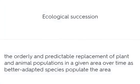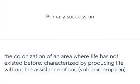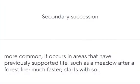Ecological succession is the orderly and predictable replacement of plant and animal populations in a given area over time as better-adapted species populate the area. Primary succession is the colonization of an area where life has not existed before, characterized by producing life without the assistance of soil. Secondary succession is more common, occurs in areas that have previously supported life such as a meadow after a forest fire, is much faster, and starts with soil.